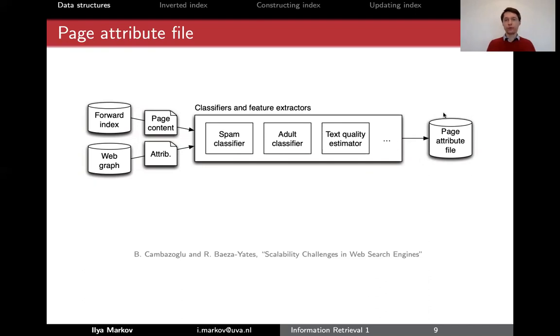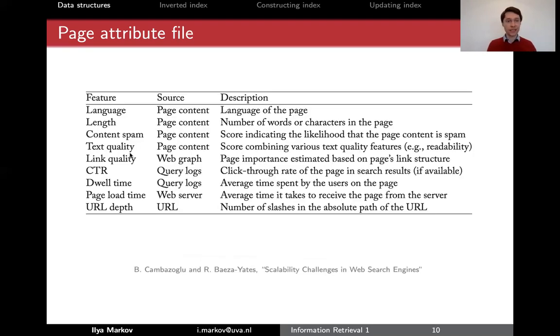All those structures - web graph, forward index, page attribute file - are different structures used for different types of purposes. Web graph only for links primarily. The page attribute file is for metadata: language of a document, length of a document, something that describes the document as a whole, the number of clicks if we talk about search, content spam, how likely this is to be spam, and so on.